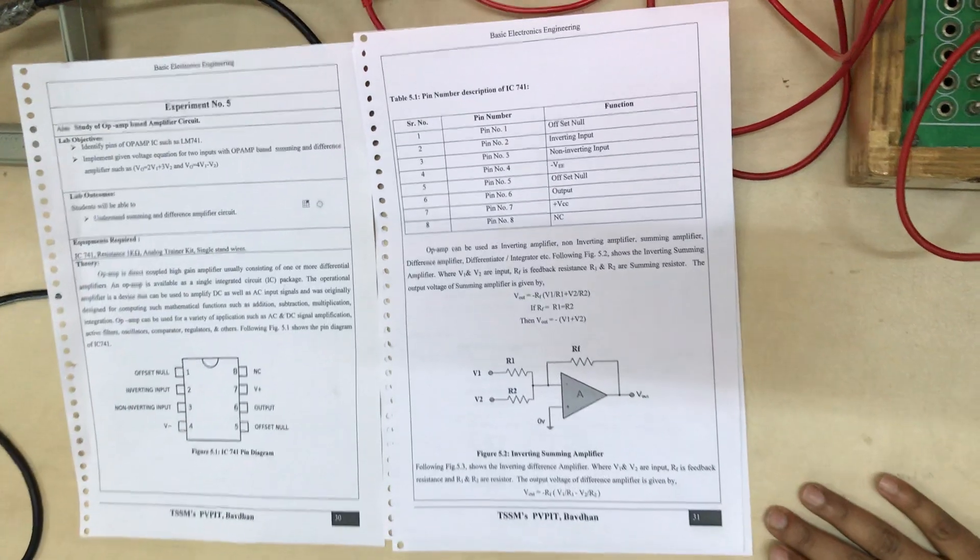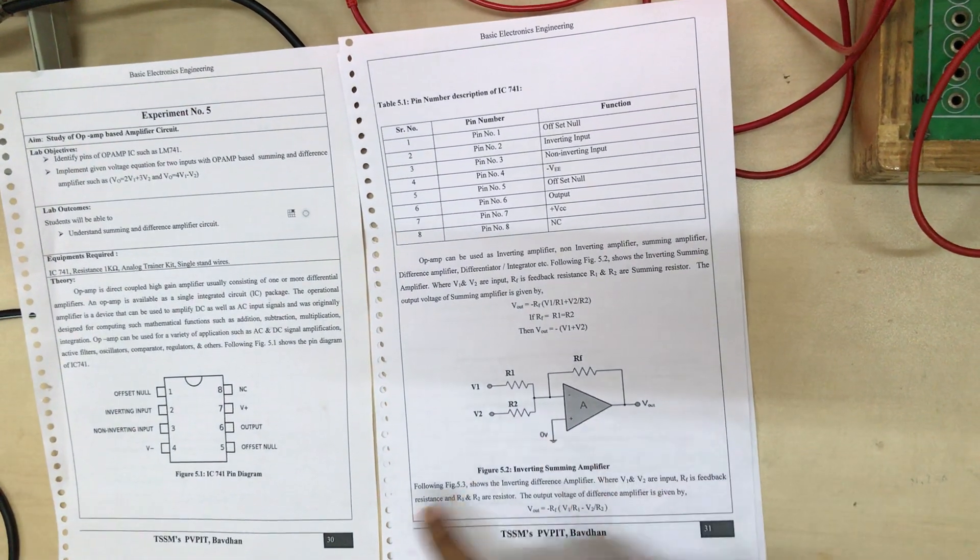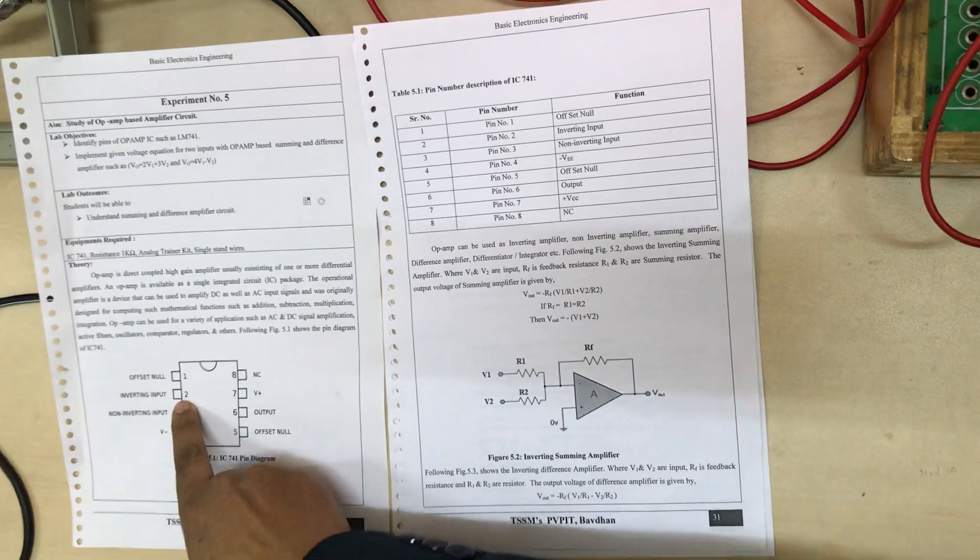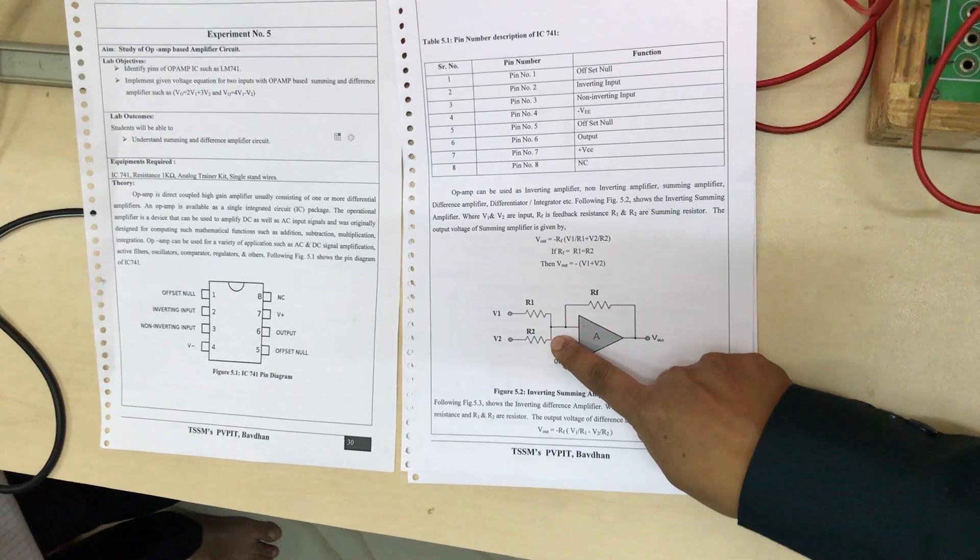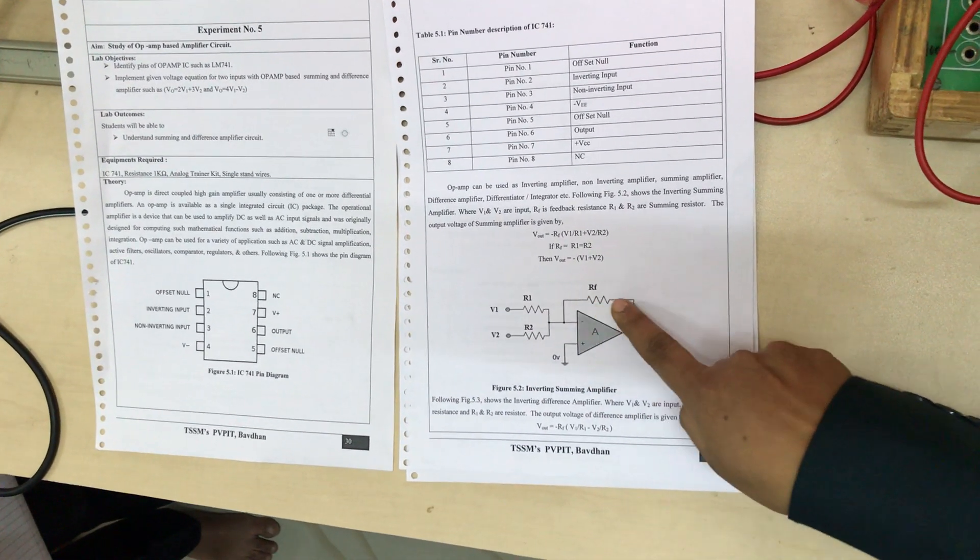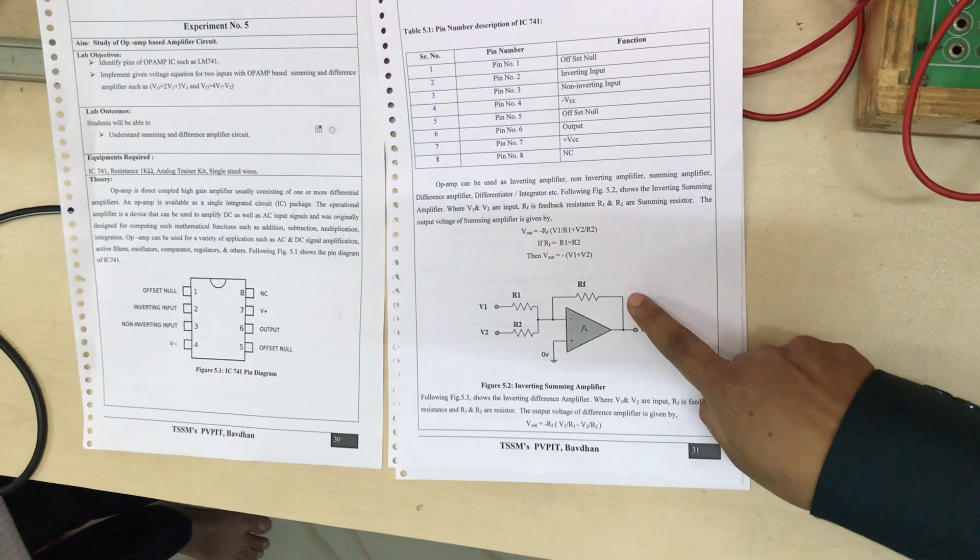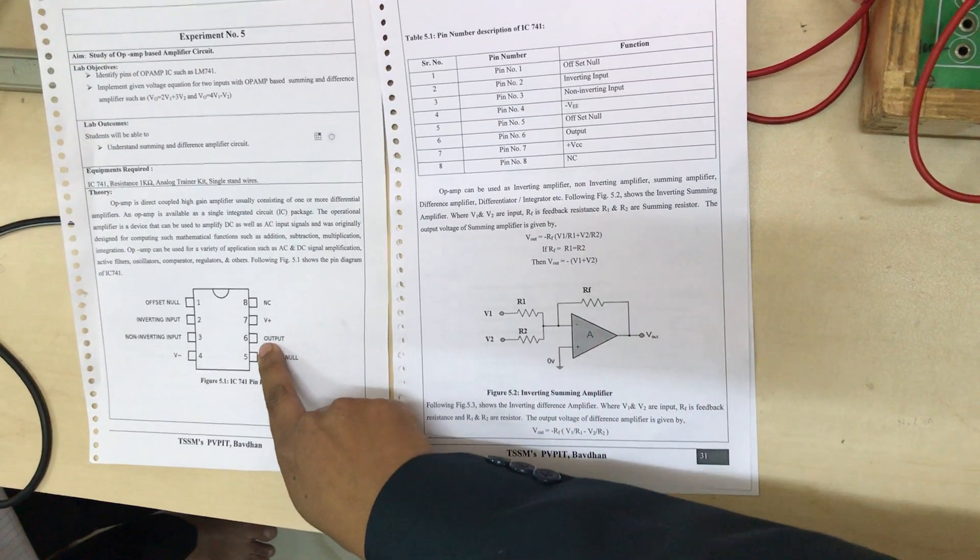This is the IC 741 and this is the diagram. Here pin number negative terminal, that is inverting input pin number 2, for this pin number 2 we have to connect 2 resistors. And for the same pin we have to connect 1 feedback resistor RF and that is connected to output, output pin number is pin number 6.